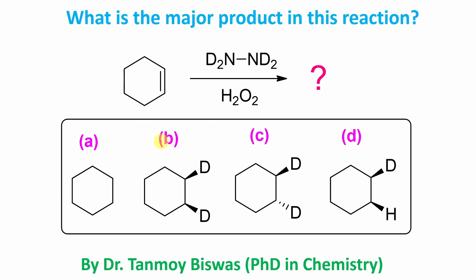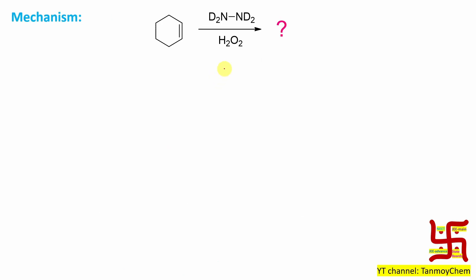Now before going to the details let's learn what's actually happening. If you look at the reaction this is cyclohexene alkene. This is actually a deuterated hydrazine D2N-ND2 reaction with hydrogen peroxide H2O2. What is the product?